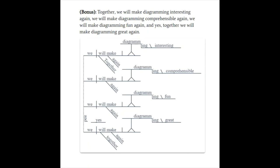So, the subject we, verb will make, direct object diagramming, objective complement interesting. How will we make diagramming interesting? Together. When? Again. We will make diagramming comprehensible. When? Again. Make it fun. When? Again. And yes, interjection sits there above on its own line. Yes, we will make diagramming great. Again. How? Together.